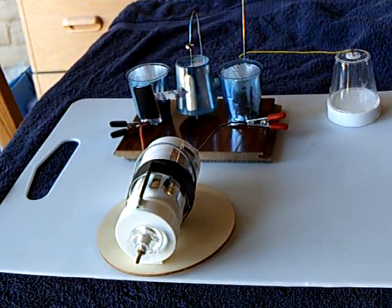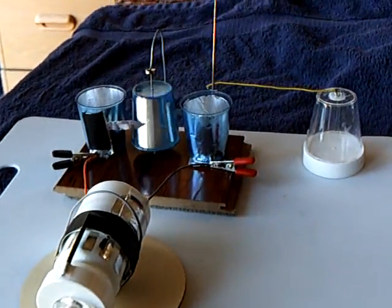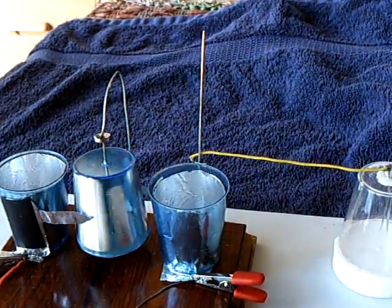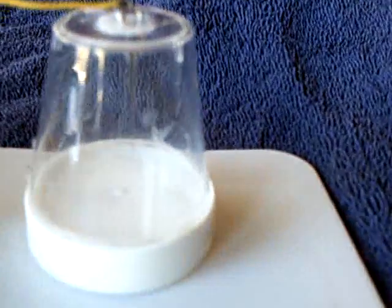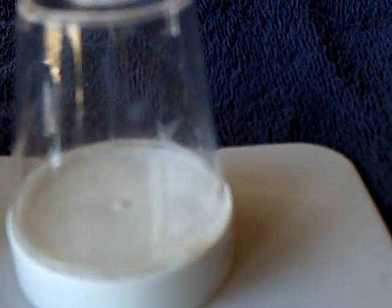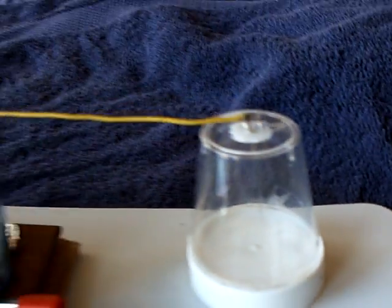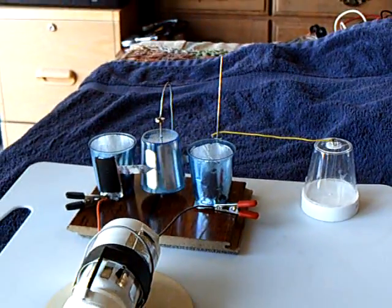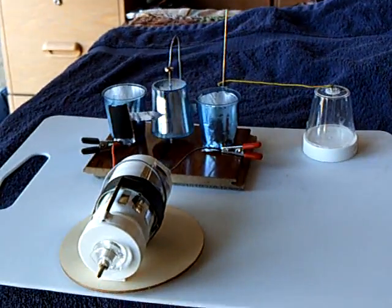And there went the electrostatic generator, and there's the electrostatic motor, and the little leaves separated for the electroscope. And that's an example of gravity doing work.